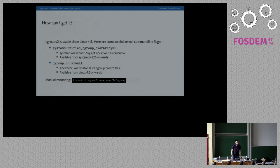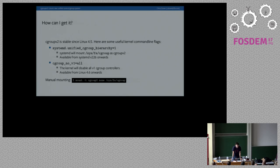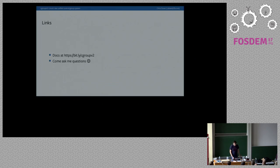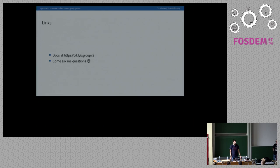To get started with cgroup v2, first you need a kernel above 4.5 — that's the first point we have a stable API. Once that's done, there are essentially two things to do: turn off all of the controllers for V1, and turn on and mount the filesystem for V2. Typically you want your init system to do this. For systemd, you use it with a specific flag — you put both of these on the kernel command line. If you're interested in hearing more about cgroups, come talk to me. If you've used V1 and found it lacking in some areas, please do try out V2 and let us know what you think.